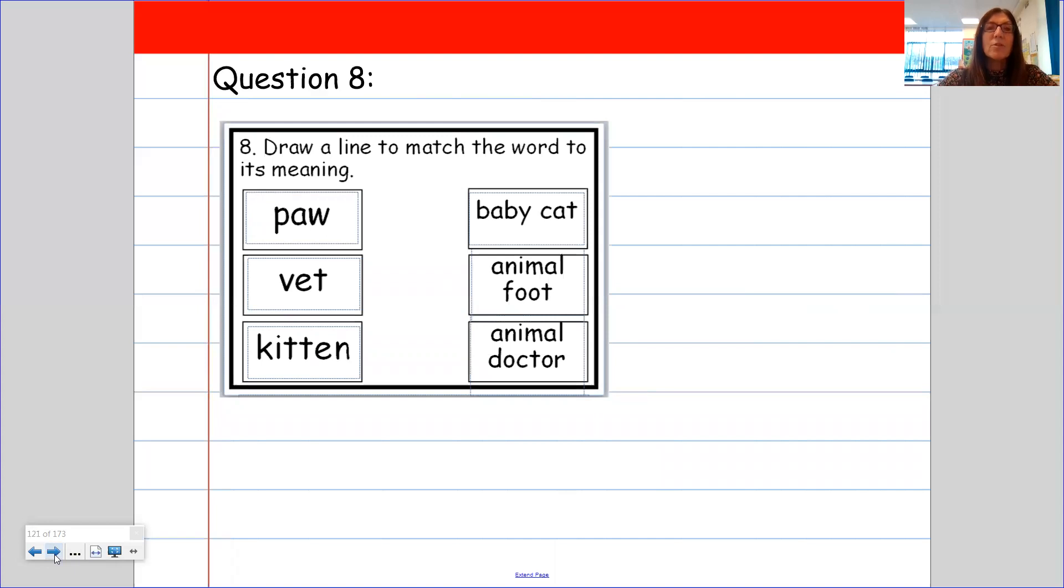Now, question 8, you have got to draw a line to match each of the words. So it says, draw a line to match the word to its meaning. So a paw. Is it a baby cat? Is it an animal foot or is it an animal doctor? If you'd like to tell your adult at home or tell yourself, yes, of course, it is a paw.